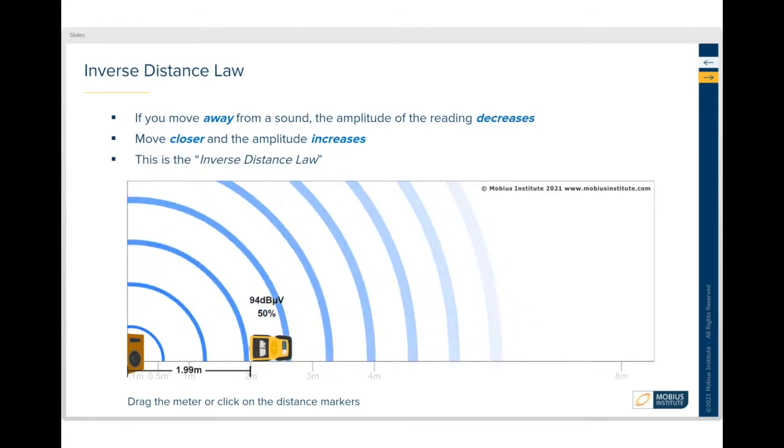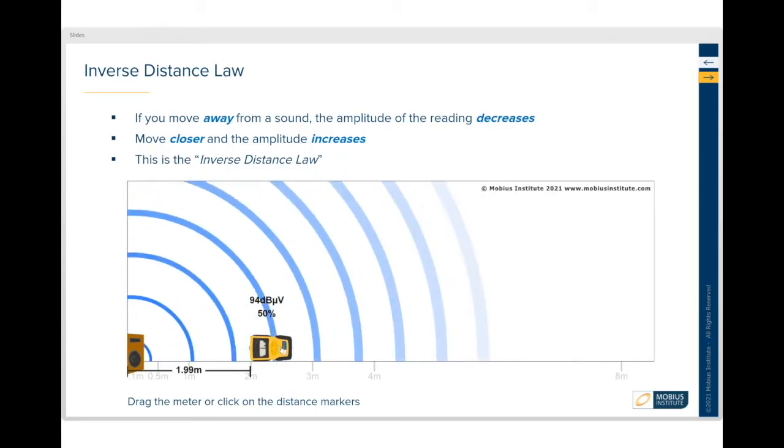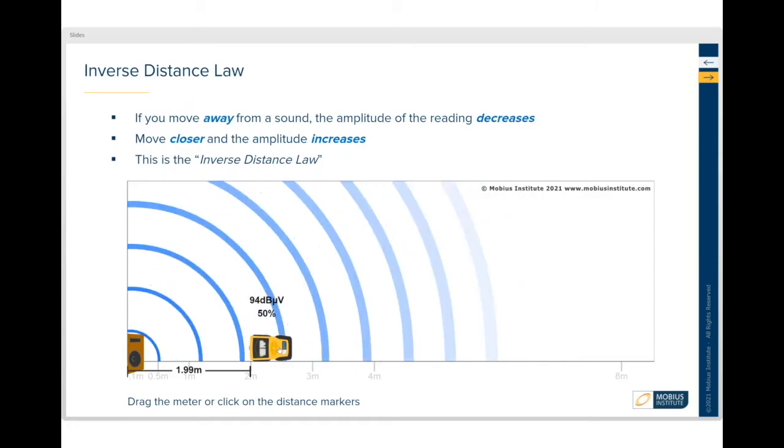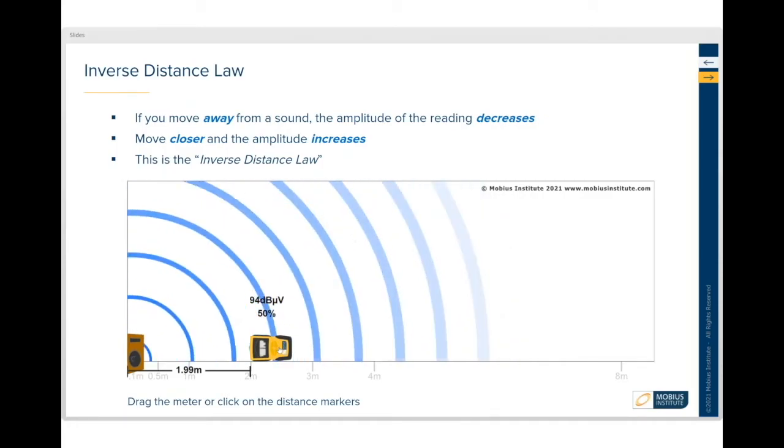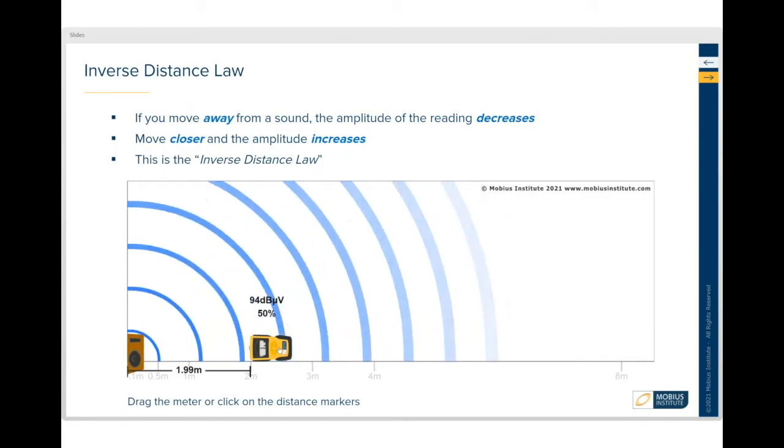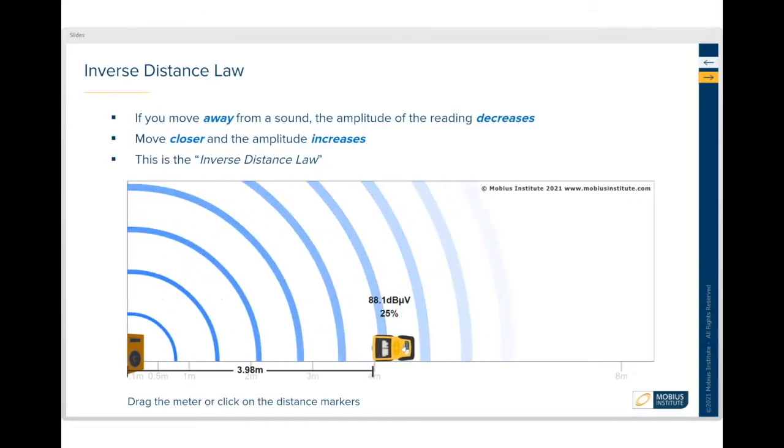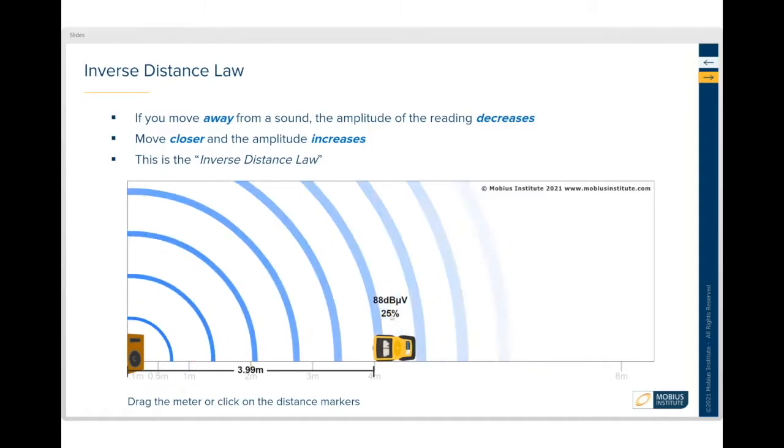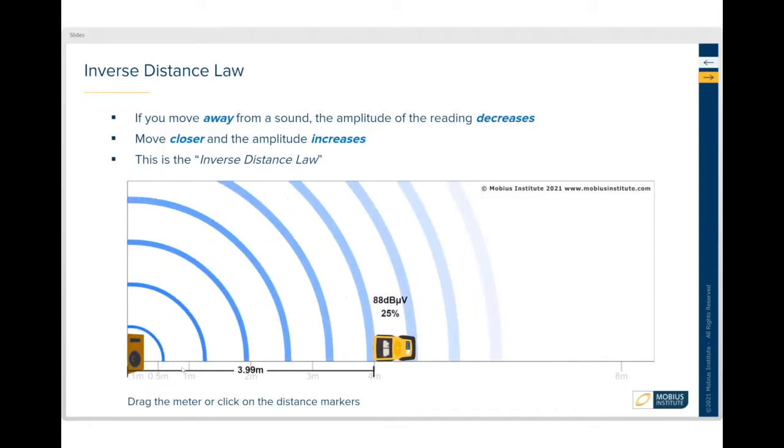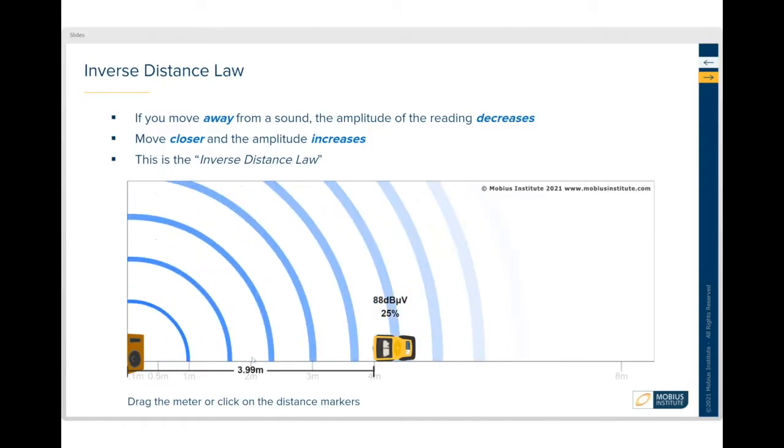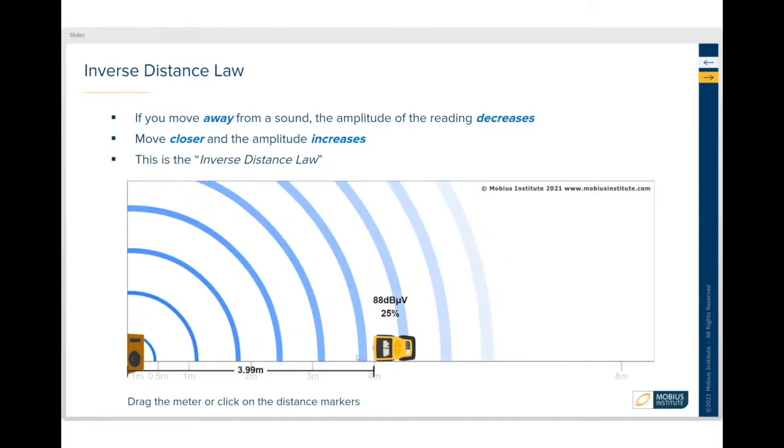If we go out from two meters and we double it, we halve the amplitude. But if I go now another double to four meters, you can see that we're now quarter of what we were at one meter. Half and half of half is a quarter.